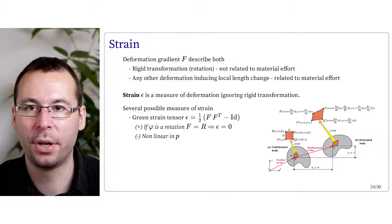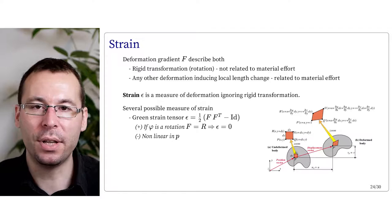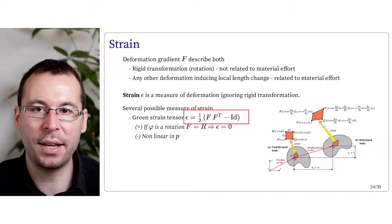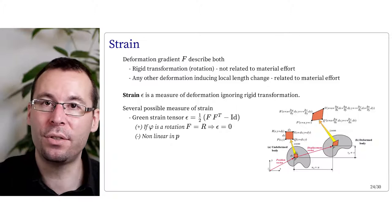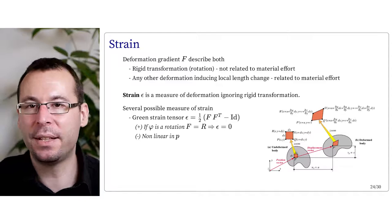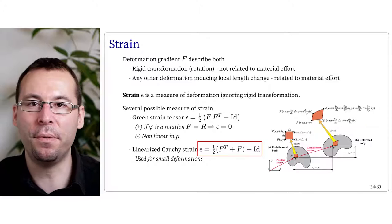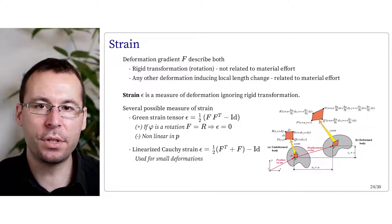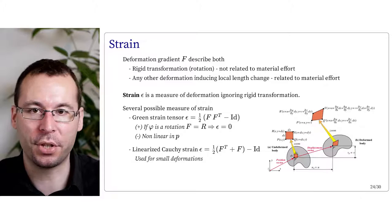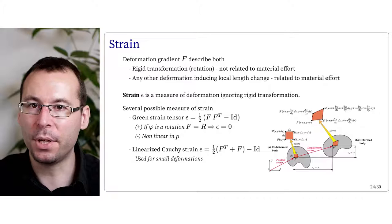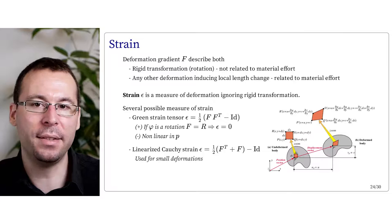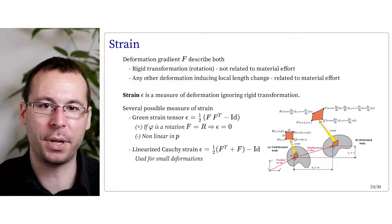Another formulation is the linearized Cauchy strain: epsilon equals 0.5 times (F transpose plus F minus identity). This corresponds to the approximation of the Green strain tensor in the case of small deformation, and in this case the formulation is linear with respect to P. But if F is a rotation far away from the identity, then the strain is not exactly 0 anymore, which may lead to an incorrect measurement of the deformation.